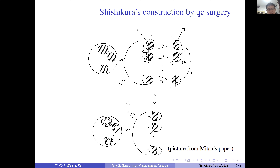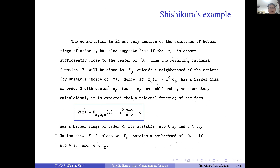The original map is F0, and he obtains a quasi-regular map. After solving for the invariant Beltrami coefficient, he obtains a rational map with a P-cycle of Herman rings, and the rotation number is the same as this P-cycle of Siegel discs.